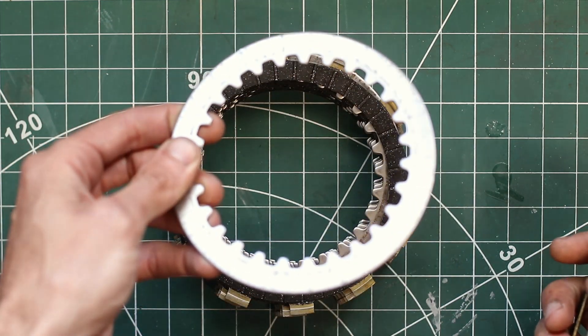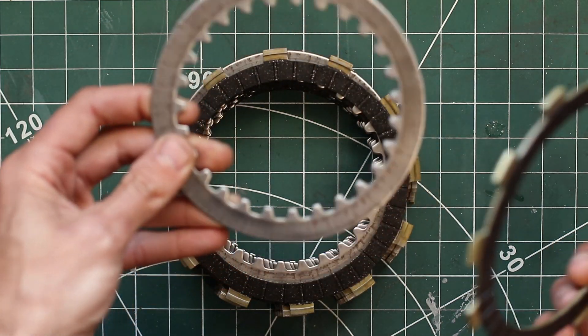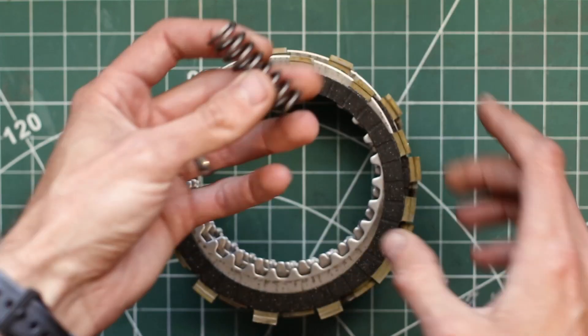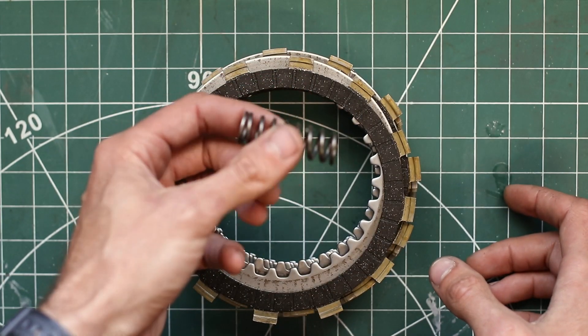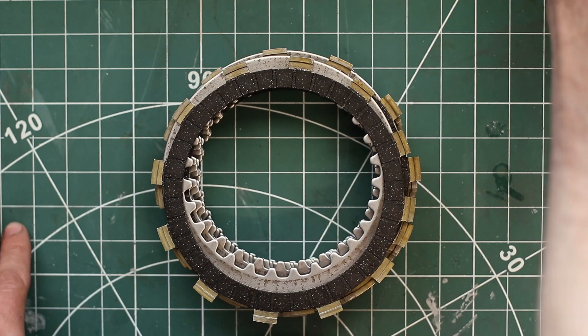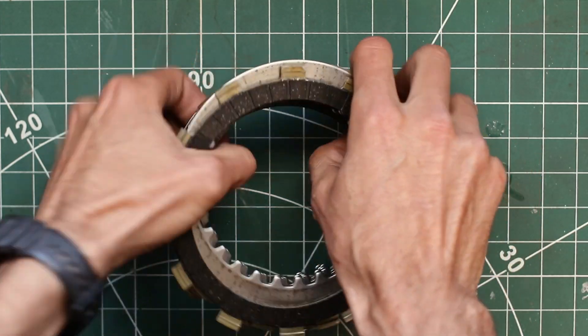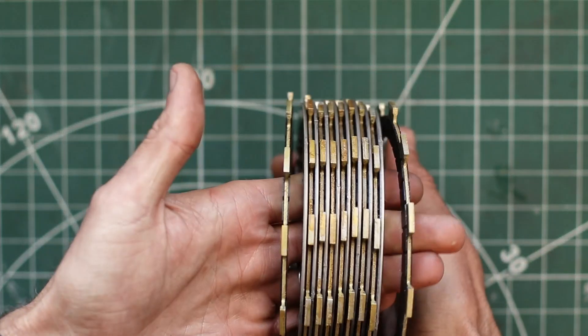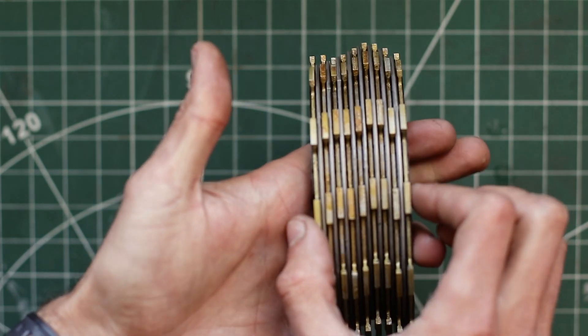We need to measure the warpage of the clutch plates, the free length of the clutch springs as well, and last but not least, we need to measure the width of the clutch stack as well.